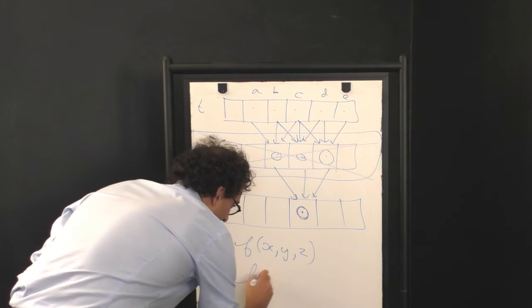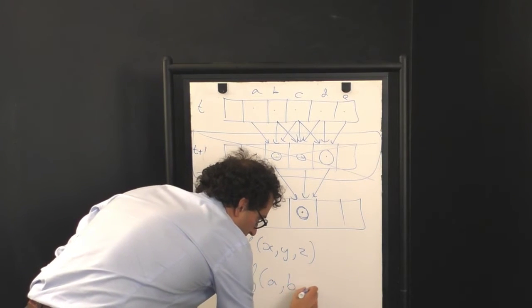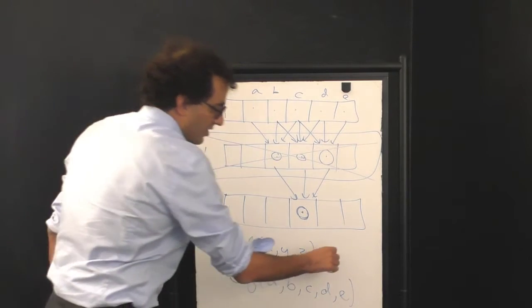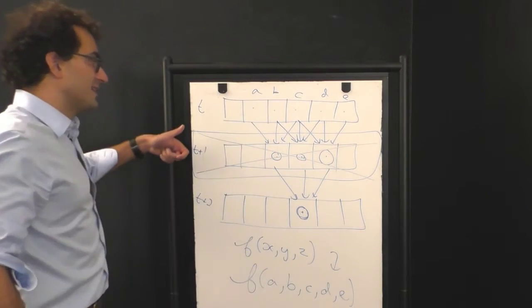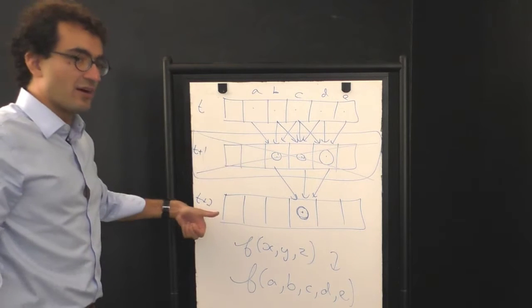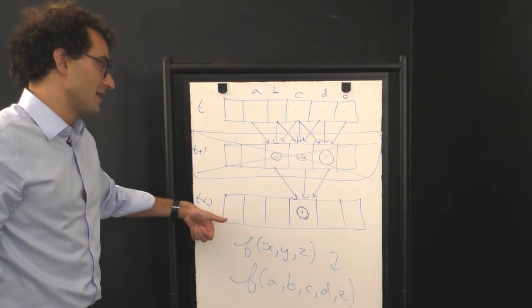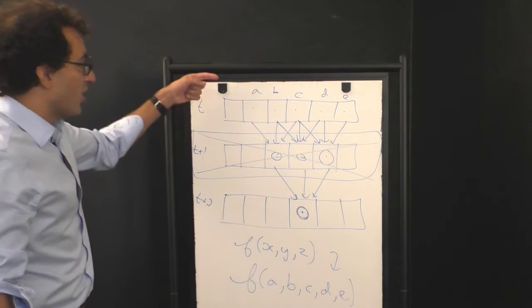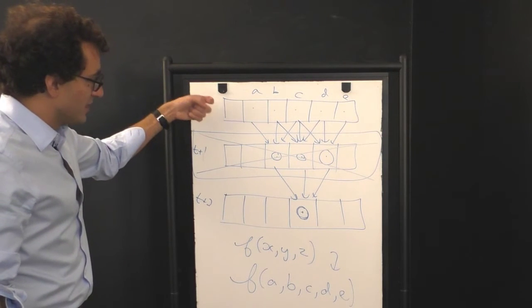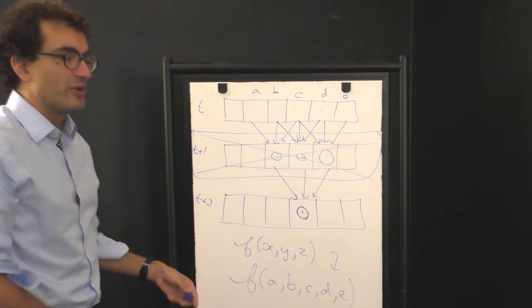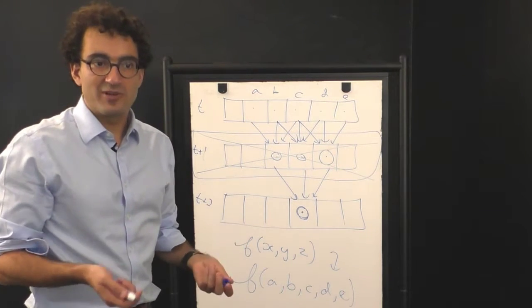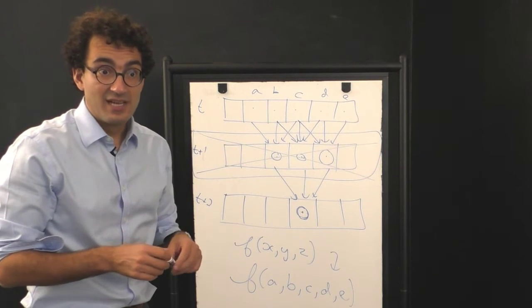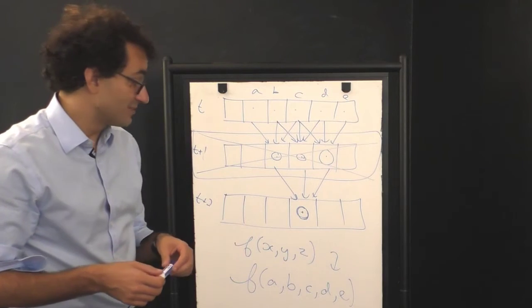You'd have to, in fact, have five inputs to your function. When you coarse grain a cellular automata only along the time dimension, you no longer stay within the same model class. If you said, okay, produce a model that can get you from here to here, that model would not fall in one of the 256 cellular automata that we introduced you to in the first section of this module.